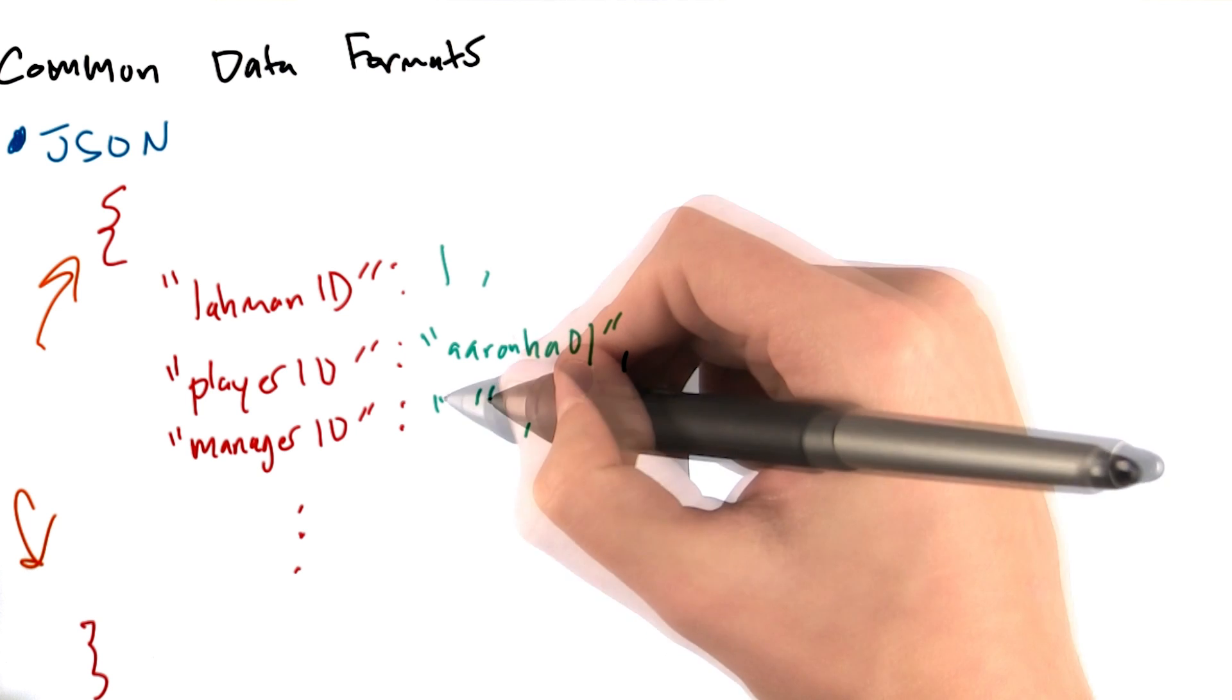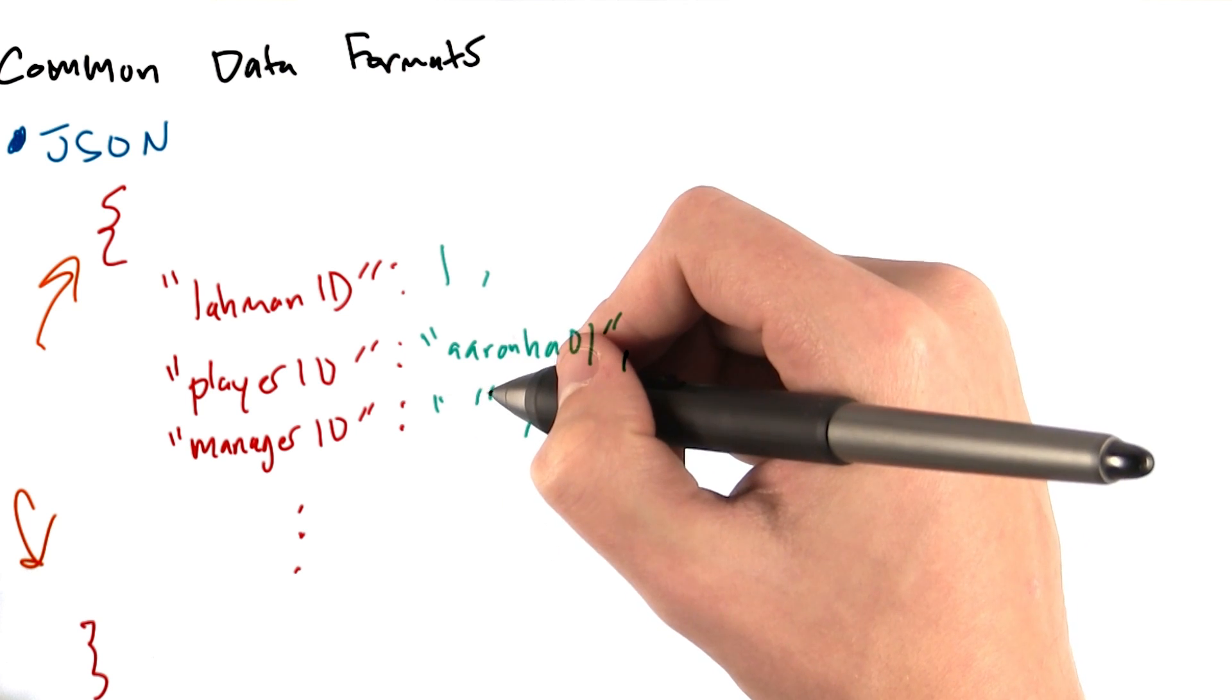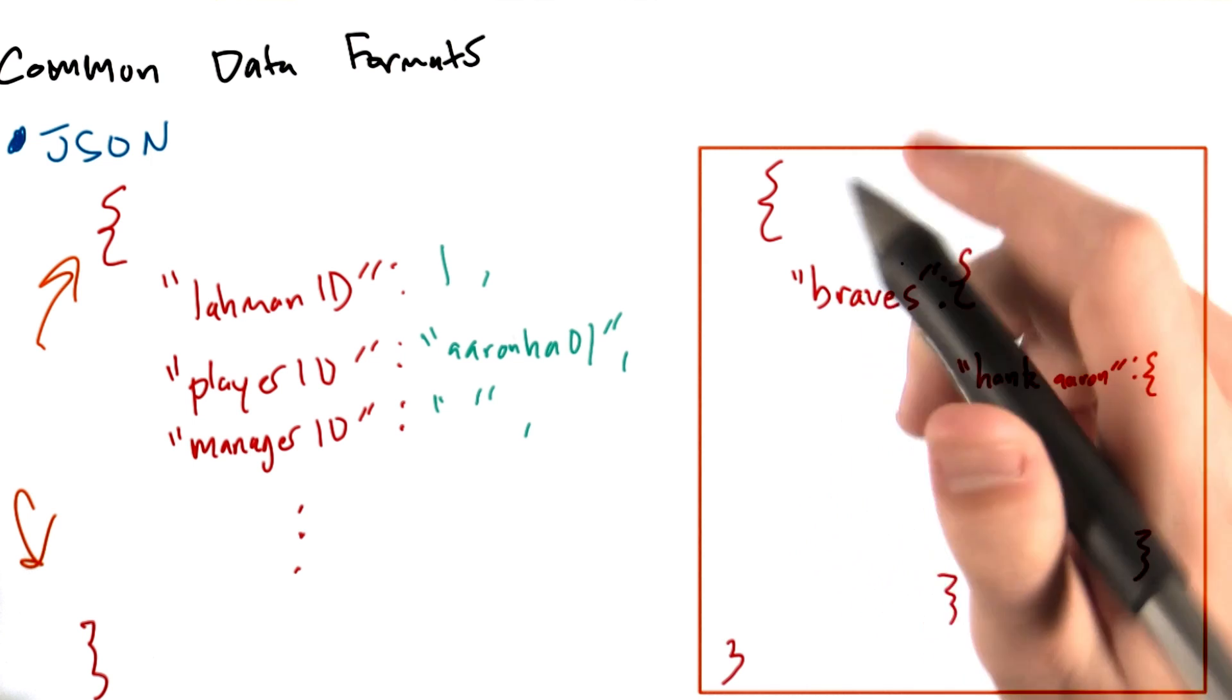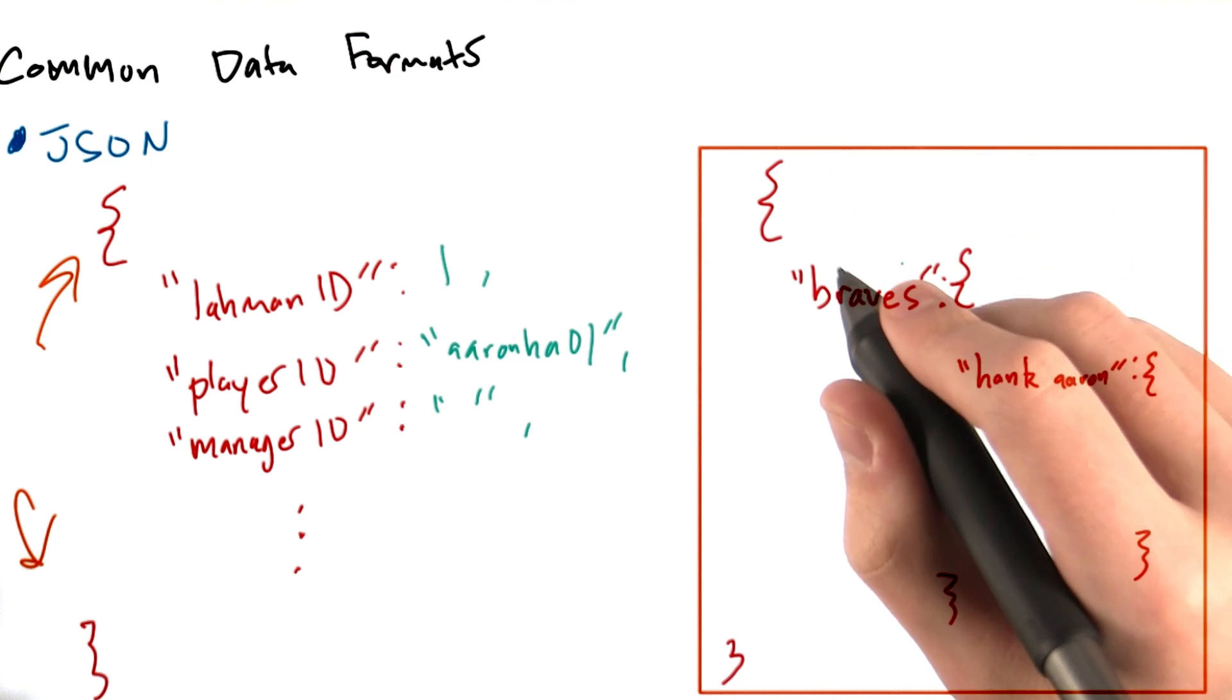Note that in the case of a missing value, we simply open and close the quotation marks. Oftentimes, the benefit of XML or JSON is that they support nested structures in a way that CSV documents cannot.